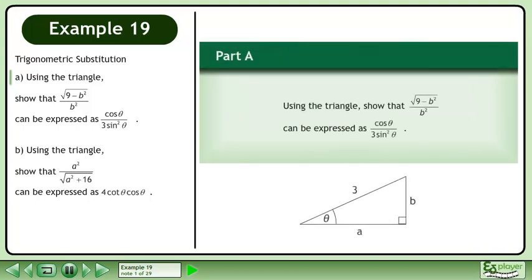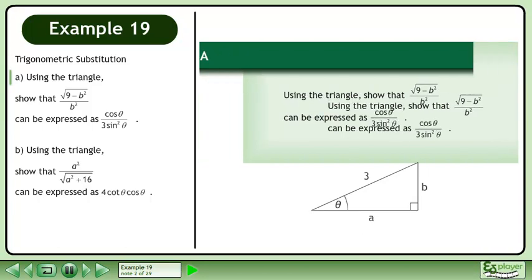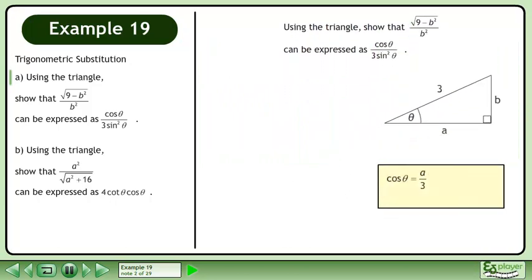Using the triangle, show that √ can be expressed as cosθ over 3 sin²θ. cosθ equals a over 3. Cross multiply to get a equals 3 cosθ.